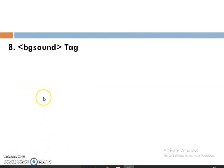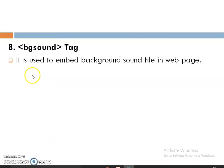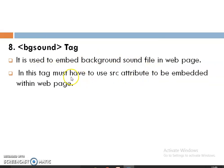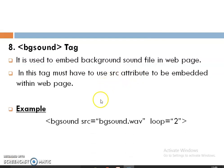The BGSound tag is used to import background sound to the web page — it embeds a background sound file in the web page. This tag compulsorily requires the src attribute. For example: bgsound src with the source of the background audio file, and a loop attribute set to 2, meaning the file will play two times in the background.